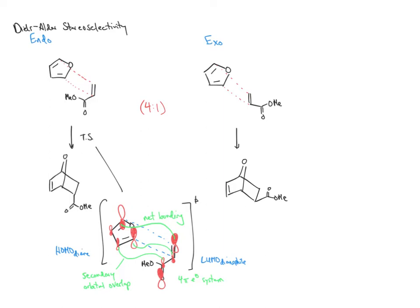If instead of a 4-pi system you just have a 2-pi system with no additional conjugation, the exo product is favored. The reason is steric interactions in the transition state. If you have a system with extended conjugation, endo is favored due to secondary orbital overlap. If you don't have conjugation and just have sterically bulky groups, that favors the exo conformation.